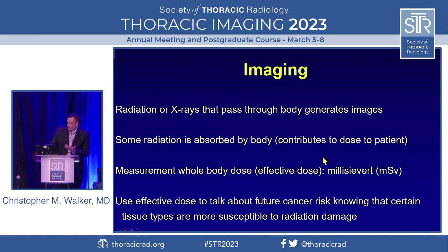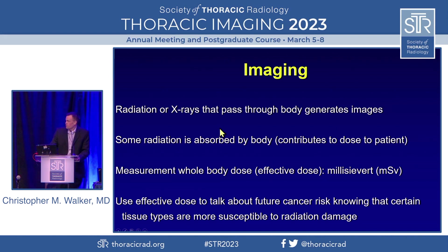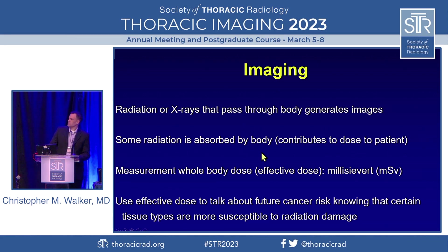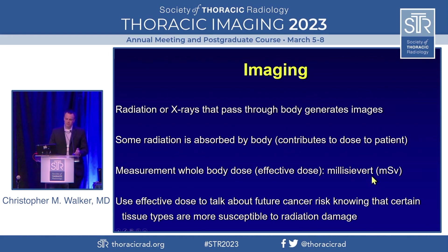When we think about imaging and how we interpret images from ionizing radiation, the images from a radiograph or CT are formed by x-rays that pass through the body. Some of that radiation used to make the images is absorbed by the body, contributing to the patient's dose. When we look at whole body dose, we use the term effective dose, given in millisieverts. We use effective dose to talk about future cancer risk, knowing that certain tissue types — like developing breast tissue or tissues in young children — are more susceptible to radiation damage.